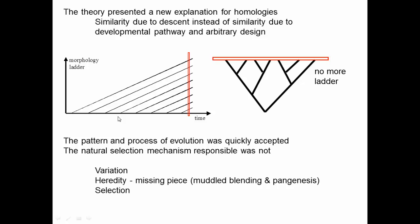The Darwin-Wallace theory also reinterprets change over time. Lamarck's model is like a ladder — things change over time for different amounts of time. The Darwin-Wallace theory is different: there's no ladder. Life starts way back in the past and changes as it comes through time; things split off from each other. These two things are similar because they share a common ancestor here; these two things are similar because they share a common ancestor there.